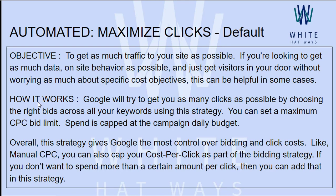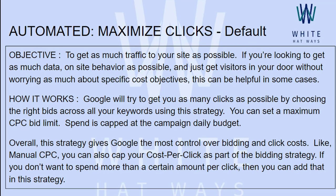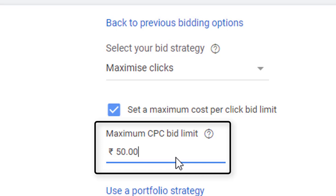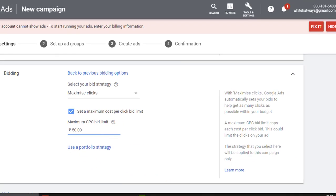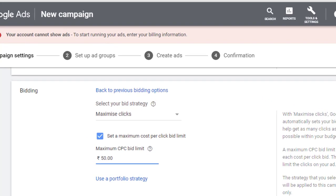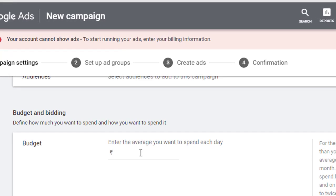How it works: Google will try to get you as many clicks as possible by choosing the right bids across all your keywords using this strategy. You can set a maximum cost per click bid limit, asking Google not to exceed that amount per click. The spend is capped at the campaign daily budget.